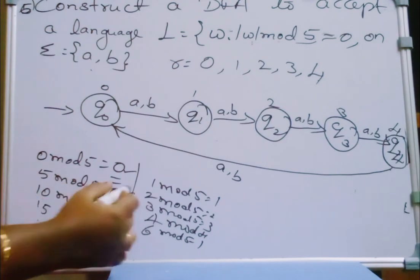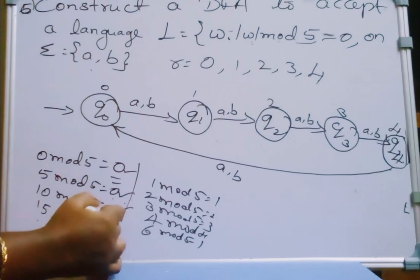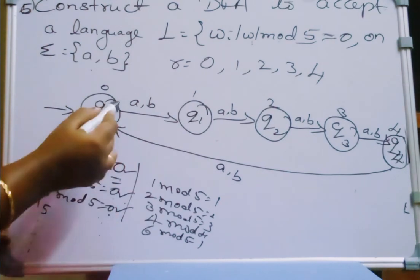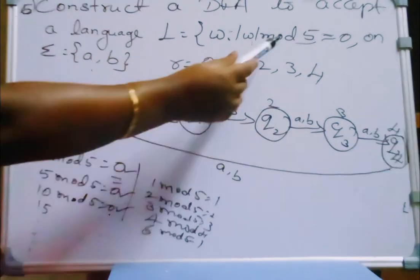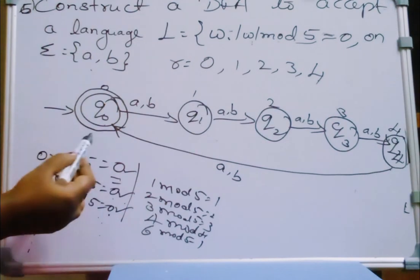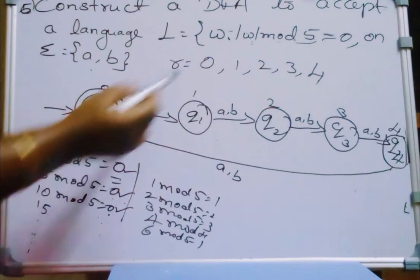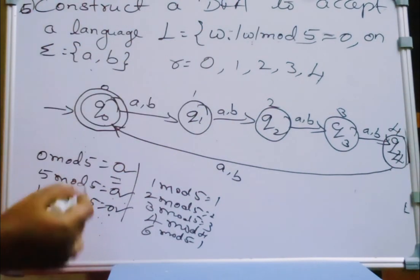Only for multiples of 5 will the remainder mod 5 be 0. The state where the remainder is 0 is Q0. So Q0 should be our final state. The starting state itself will be the final state when the string length mod 5 is equal to 0 — the starting state and the final state are the same for W mod 5 equal to 0.